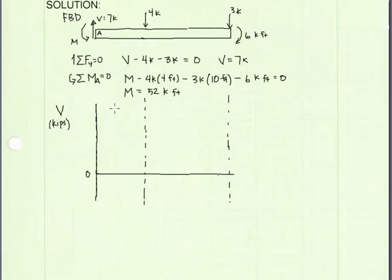I can now draw my shear diagram. I've set up my axes. At point A, we have a point load applied, which is the reaction force, which is equal to 7 kips in the upward direction. So we will get an abrupt jump at x equals 0 feet from 0 up to 7 kips.